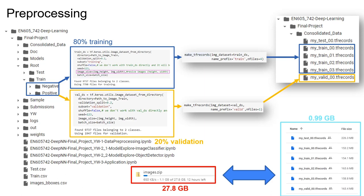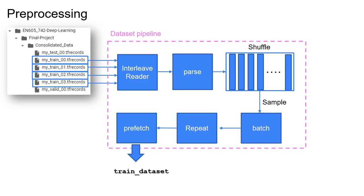Before training our model, we converted our original 28 gigabytes of images to TF Records files to increase efficiency and reduce the size of the training, testing, and validation datasets. We split the training dataset into four different shards, while validation and testing each consist of a single shard. Using TF Records, we were able to reduce the 28 gigabytes of image data to only about 1 gigabyte, which really enhanced our pre-processing step.